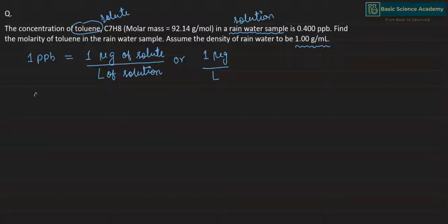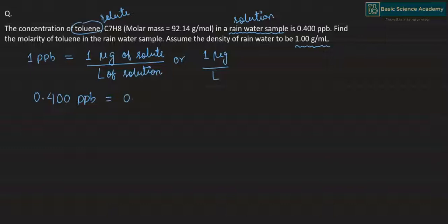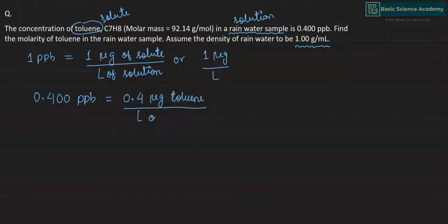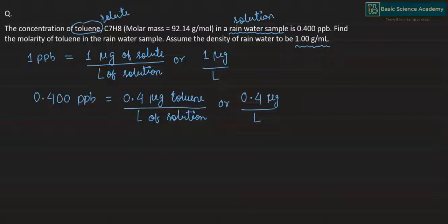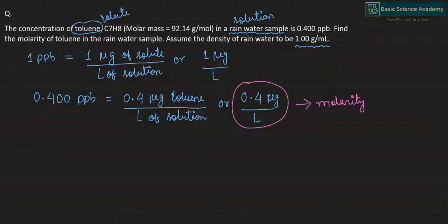We are given 0.400 ppb, so this will be equal to 0.400 microgram of toluene per liter of solution, or 0.400 microgram per liter. Now we have to convert this 0.400 microgram per liter to molarity. The definition of molarity is moles of solute per liter of solution.